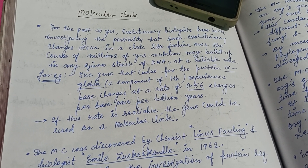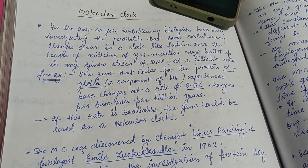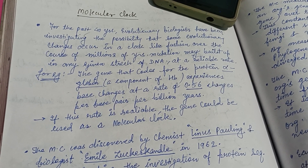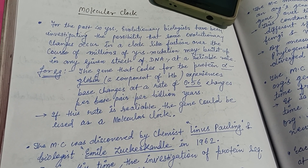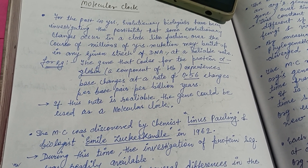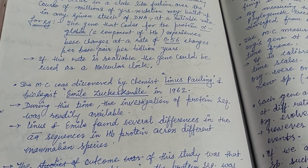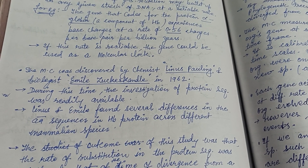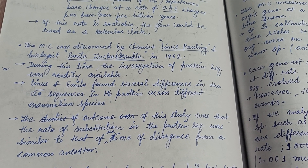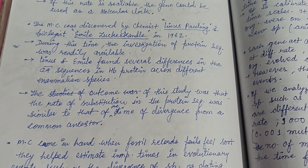Today we are going to see what a molecular clock is. It is a change in a rhythmic fashion over a period of time — evolutionary changes occur in a clock-like fashion. For example, in the case of hemoglobin, the gene that codes for the protein alpha-globin experiences base changes at a rate of 0.56 changes per base per billion years. If the rate is reliable, the gene could be used as a molecular clock. It was first discovered by Linus Pauling and the biologist Emile Zuckerkandl.